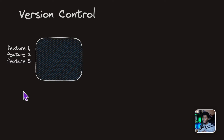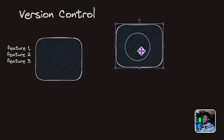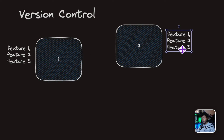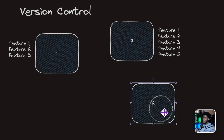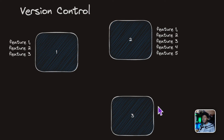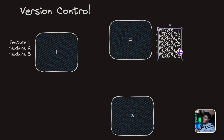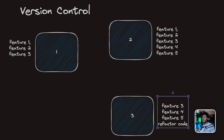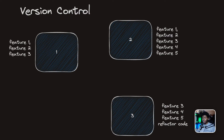Now you want to improve this project — maybe you want to add more features or improve the UI. Now you're going to have another version of this project, version two. Version two is going to contain feature one, two, and three from version one, and then maybe feature four and five. Over time again, you make improvements and now we have version three, where you remove feature one and two, don't add any new features, and just refactor the code.